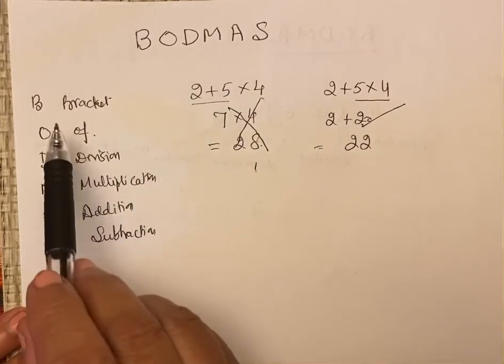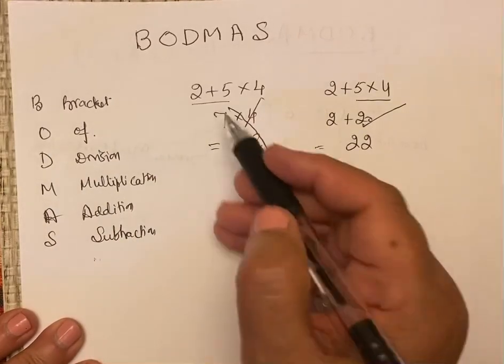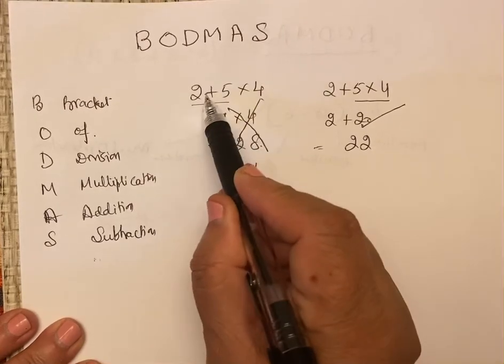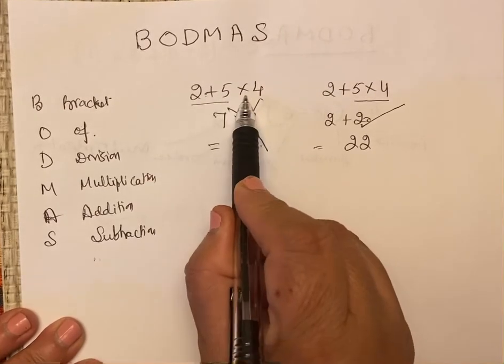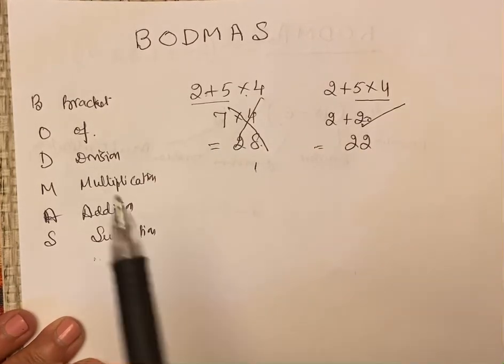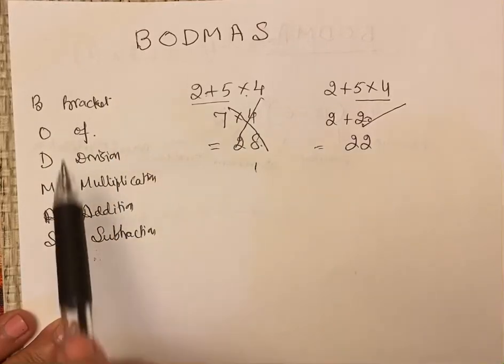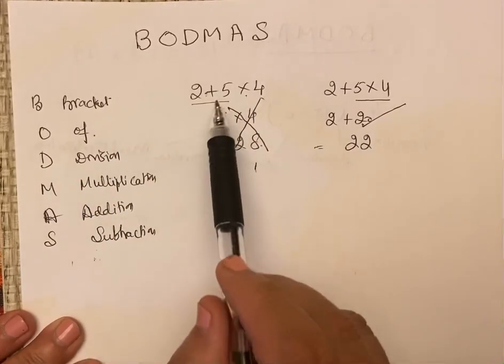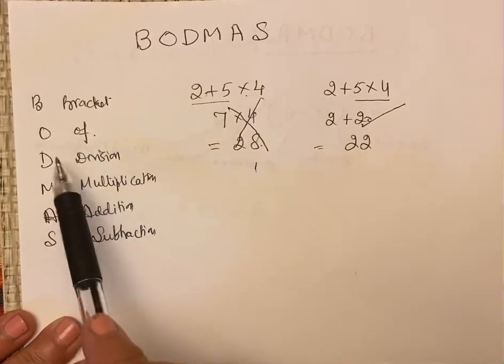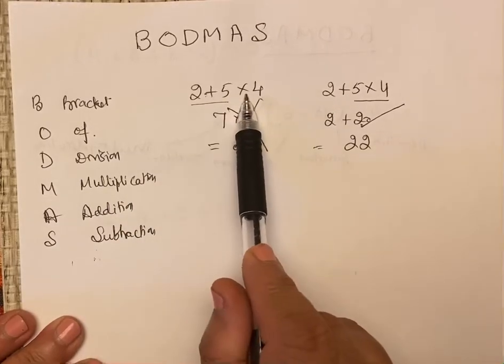How? Because if we take this BODMAS, in this we have to solve, out of addition and multiplication, which one to solve first. We will take these in the sequence. First, we have addition and multiplication. Here we will see which comes first, addition or multiplication. Multiplication first and addition later.